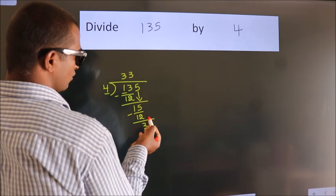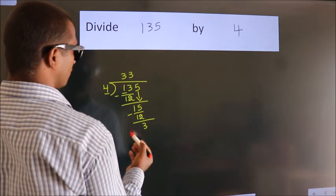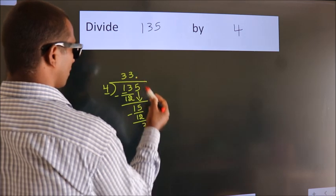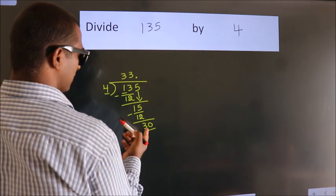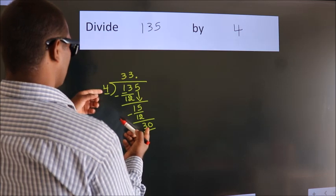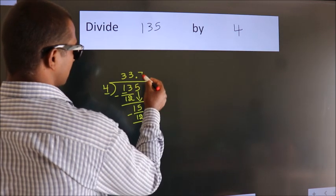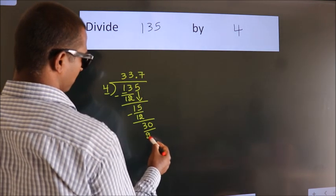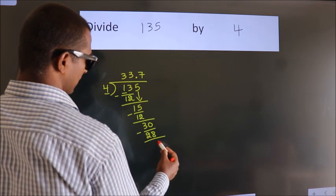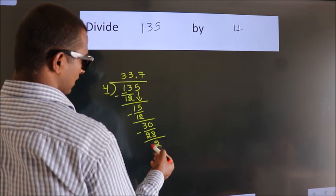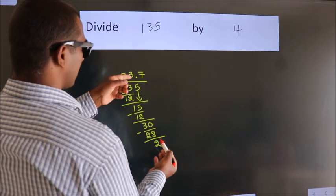After this, no more numbers to bring down. So what we do is, we put a dot and take 0. So, 30. A number close to 30 in the 4 table is 4 times 7, which is 28. Now we subtract. We get 2. After this, we already have the decimal.